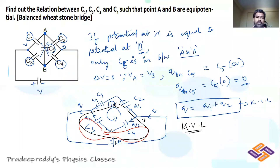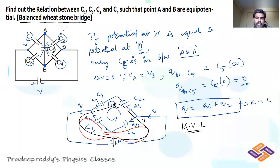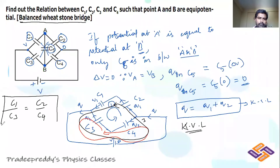Whenever you get this kind of circuit such that potential at A equals potential at B, you can eliminate C5. Such a circuit is called a balanced Wheatstone bridge. You can check whether the bridge is balanced by taking the ratio: C1/C3 = C2/C4. If this ratio is satisfied, then potential at A equals potential at B.